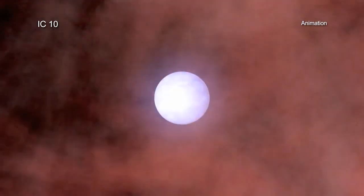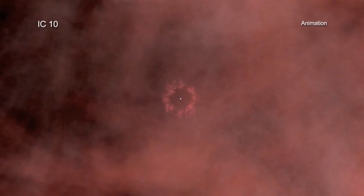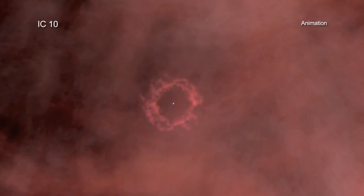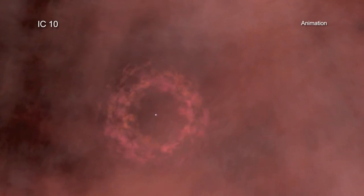When the massive companion star runs out of fuel, it will undergo a catastrophic collapse that will produce a supernova explosion and leave behind a black hole or neutron star.